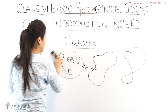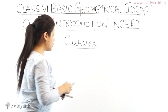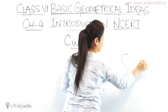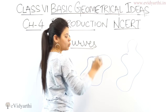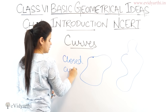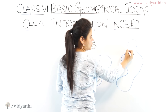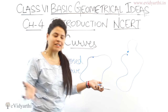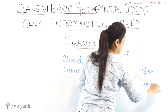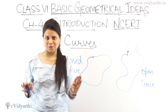In curves, there is another distinction. If I draw two curves — one where the starting point and ending point are the same, that becomes a closed curve. And another where it starts at one point and ends at a different point — that is an open curve. So we have seen three things: simple curves (don't cross themselves), closed curves (starting point equals ending point), and open curves (start and end points are different).